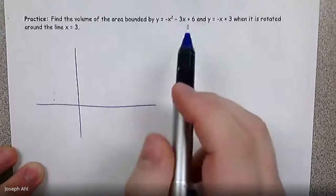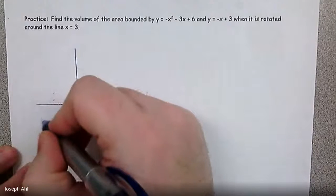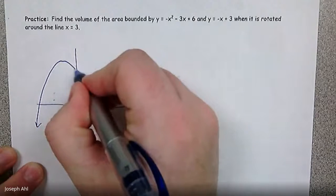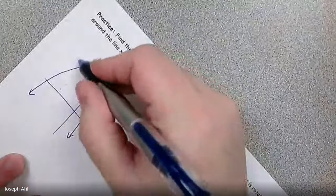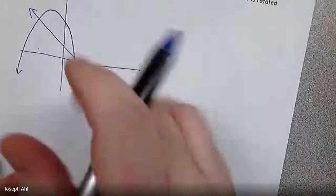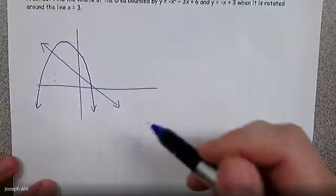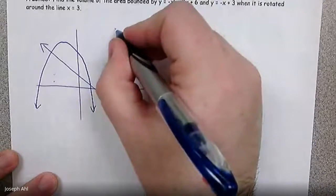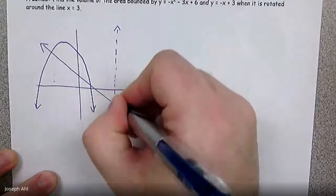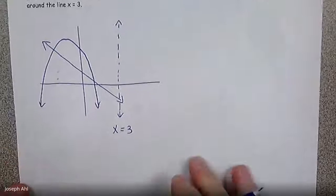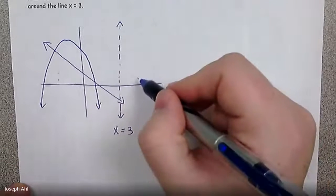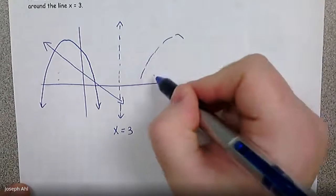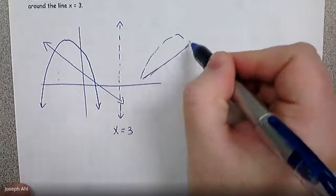So we have our function negative x squared minus 3x, which looks something like this. And we're taking this region right here. And this is just a rough sketch, by the way, don't judge me too harshly based on it. And we're rotating around the line x equals 3. So when I take this region and I rotate around, we're going to get kind of this matching region over here.